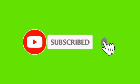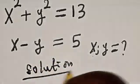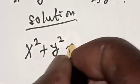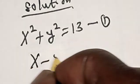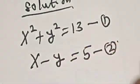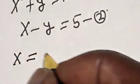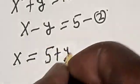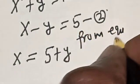Solution: we have the given equation x squared plus y squared is equal to 13 — let's call this equation 1. Then x minus y is equal to 5 — let's call this equation 2. Now from equation 2, let's make x the subject of the formula, that is x is equal to 5 plus y.